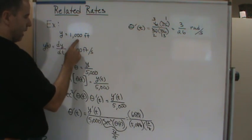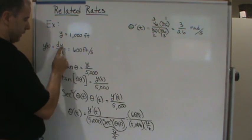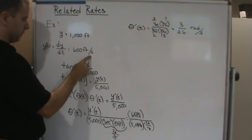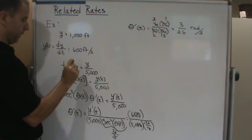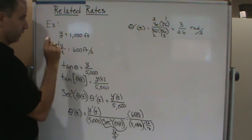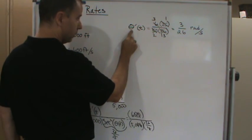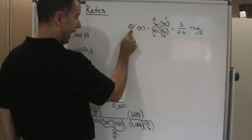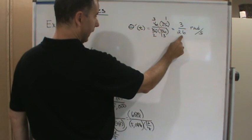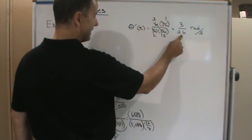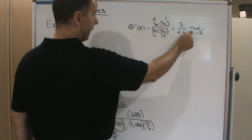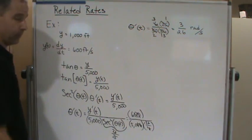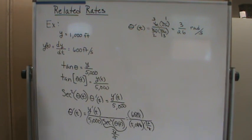To recap: when the rocket is 1,000 feet above the ground and traveling at 600 feet per second, the camera's angle must be changing at a rate of 3/26 radians per second to keep up with the rocket. That's the answer. Have a great day — see you next time!